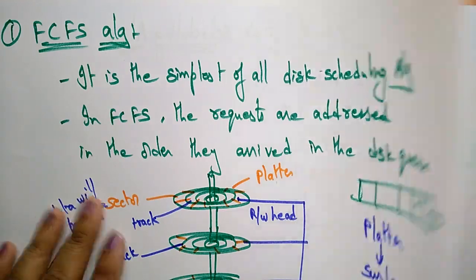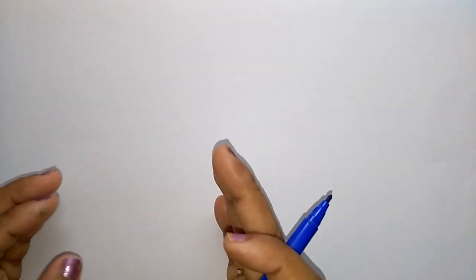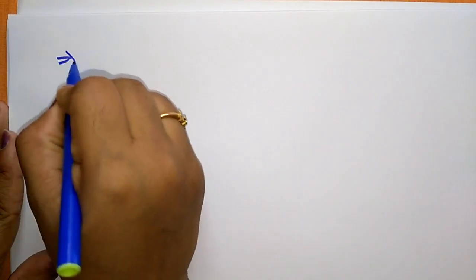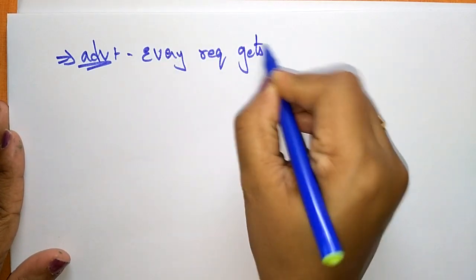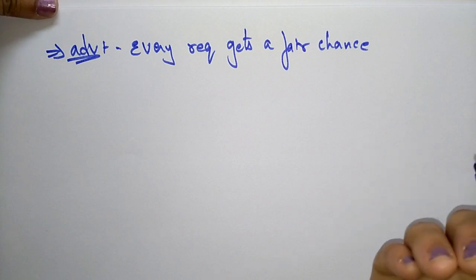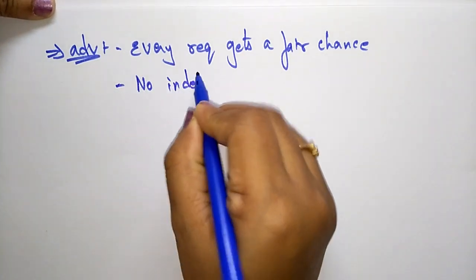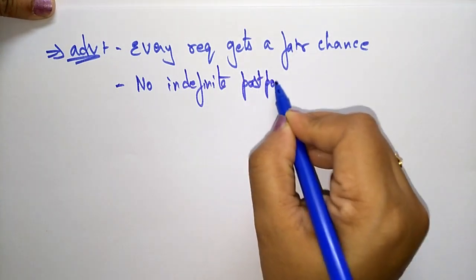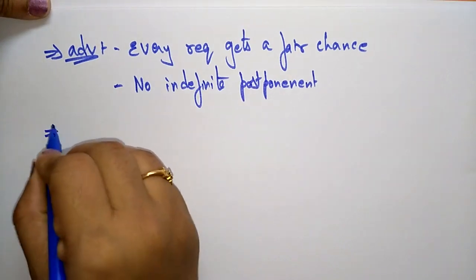In FCFS, different I/O requests come in for different tracks, and we need to determine which track is served first. The advantages of FCFS are: first, every request gets a fair chance — whatever I/O request is made, it will be served. Second, there is no indefinite postponement — every request is compulsorily served.